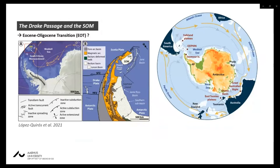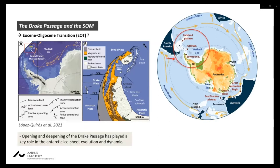The Eocene-Oligocene transition was an outstanding global climatic event involving cooling, the onset of full-scale glaciation in Antarctica, progressive global sea-level fall, and increasing ocean productivity. The opening and deepening of Southern Ocean gateways was long considered to cause such major climatic changes along the EOT, allowing exchange of water masses and eventually leading to the development of the ACC. During the initial stages of opening of the Drake Passage, the South Orkney microcontinent was isolated from the Antarctic Peninsula due to rifting and opening of Powell Basin.